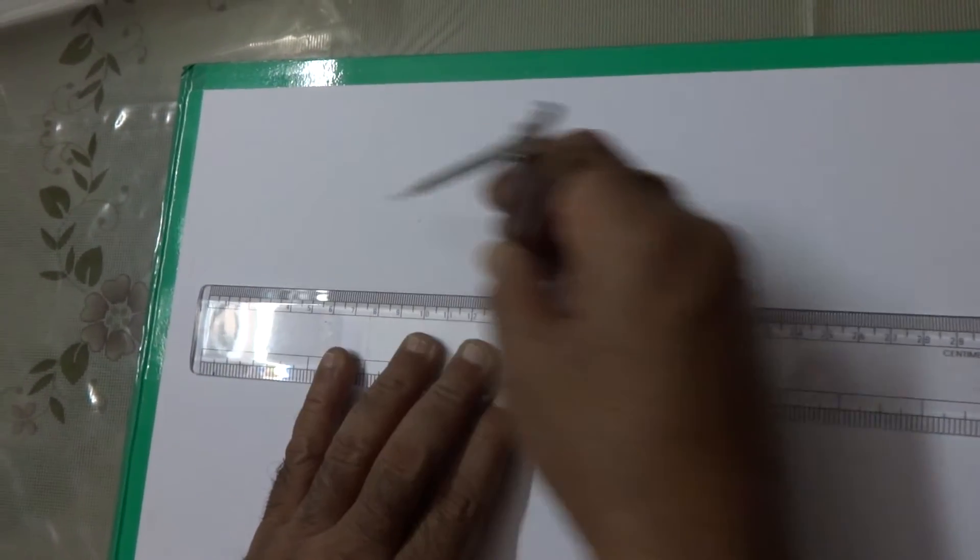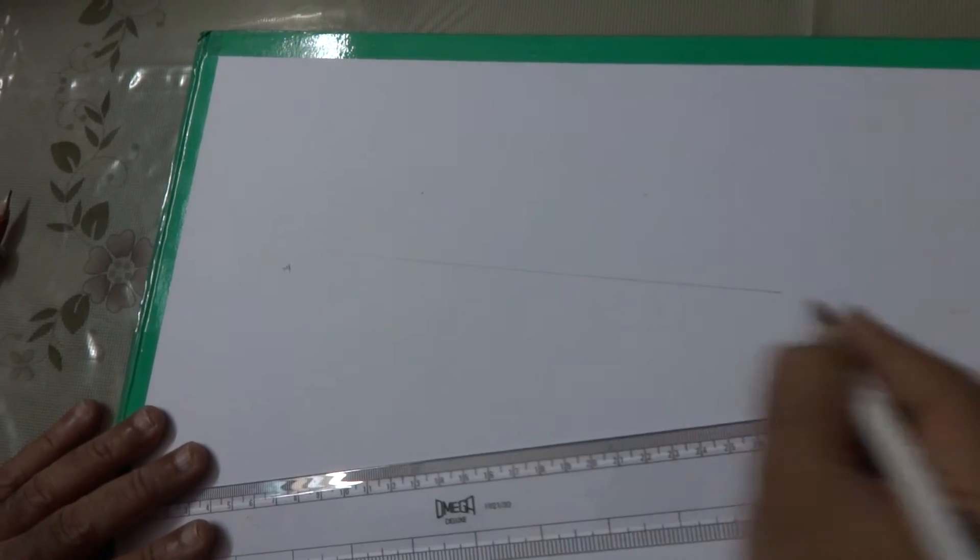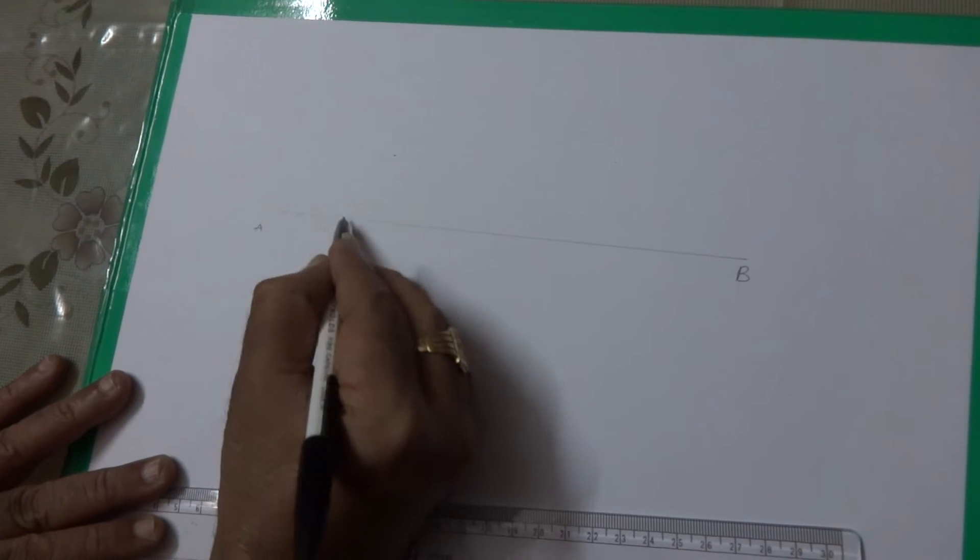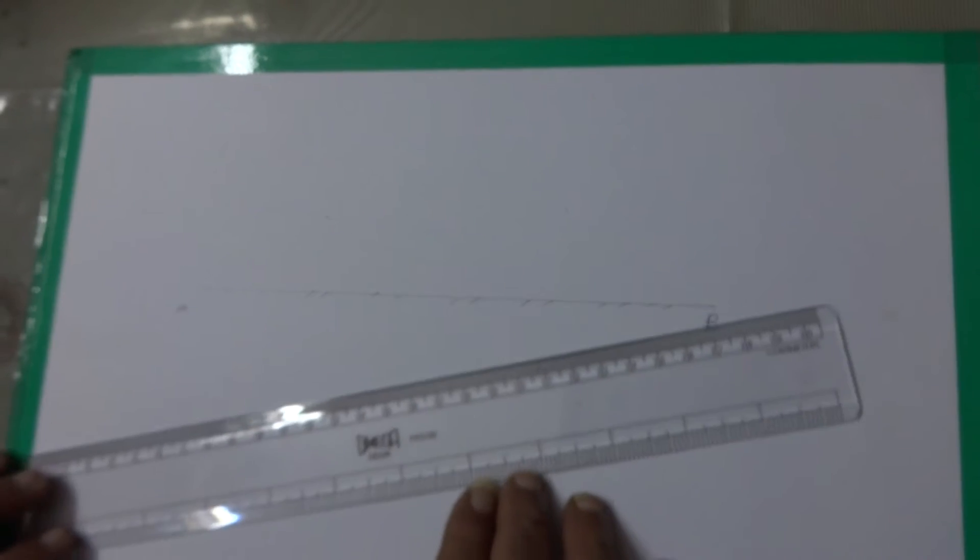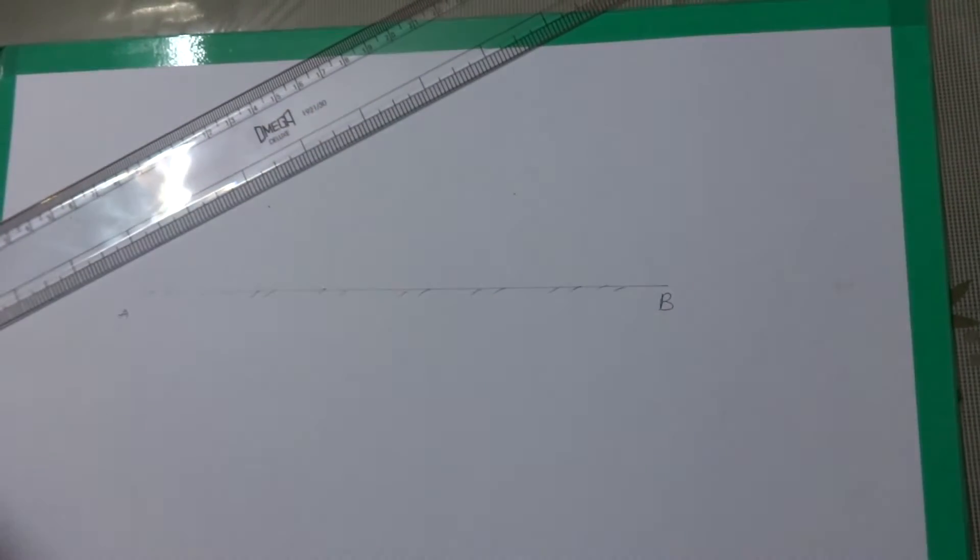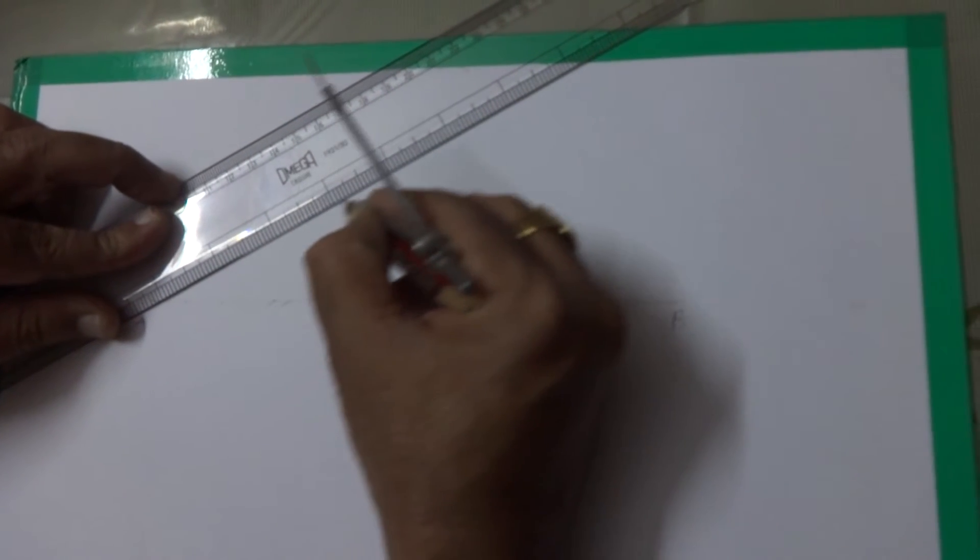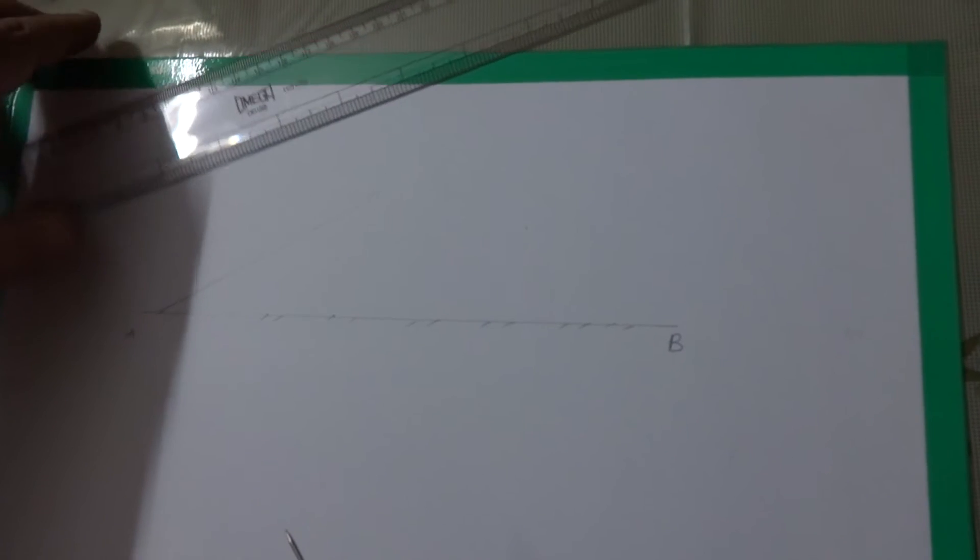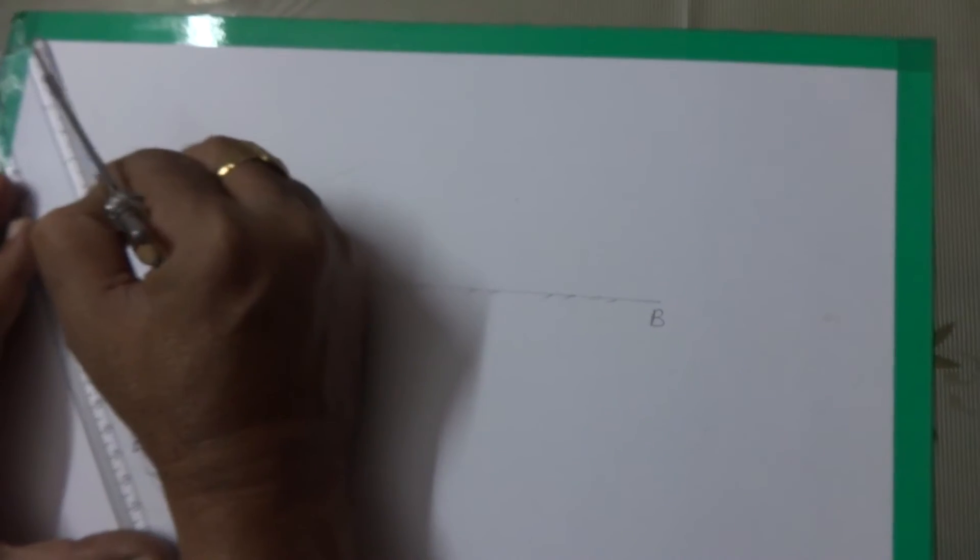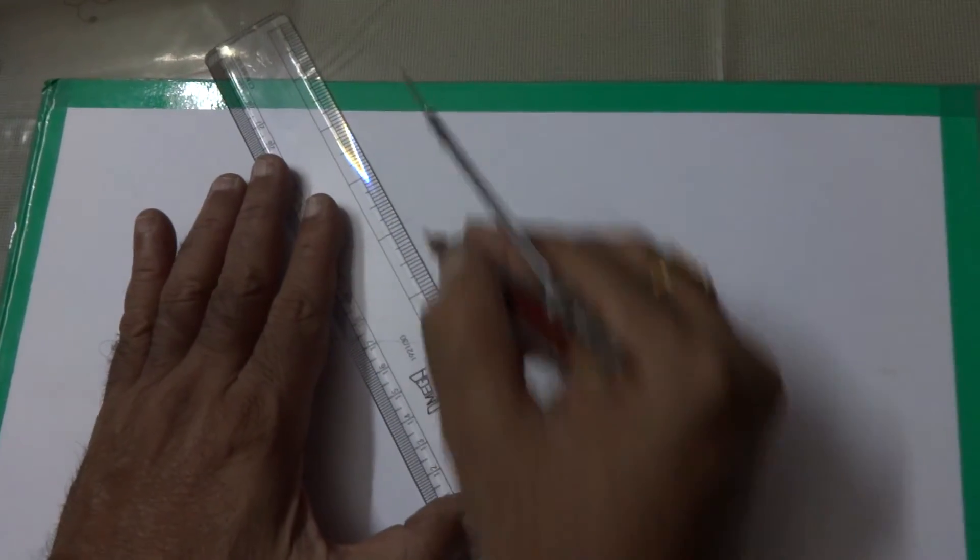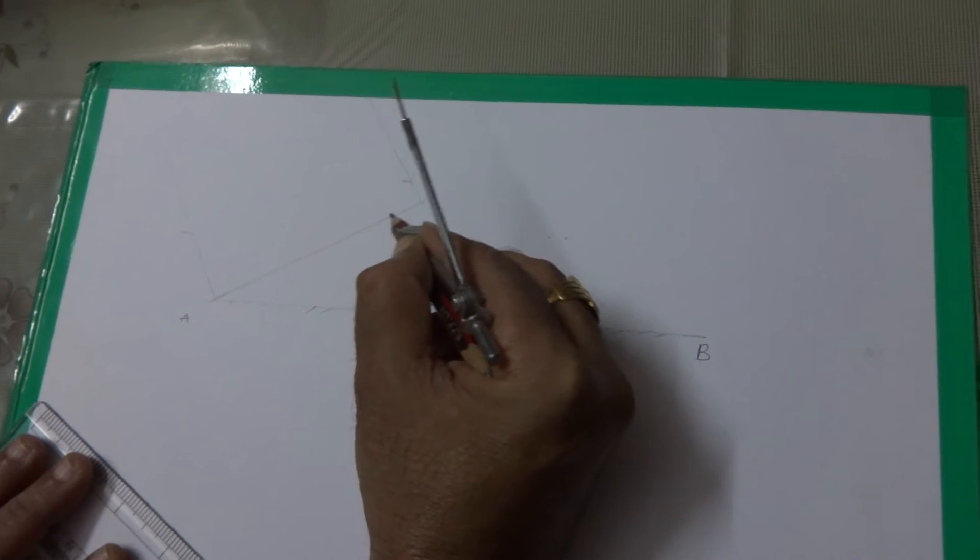For this, I have to take one interface between the two media. Let us name it as AB. This is the mirror. Now, I have to construct one plane wave front. Remember, you cannot see the waves. Only you can see the rays. That rays also can be seen only when they are falling on any objects. This is one ray. This is another ray. And this constitutes the plane wave front.